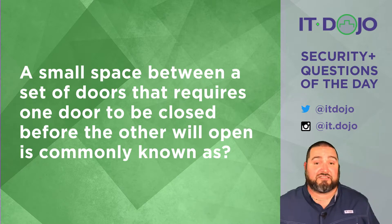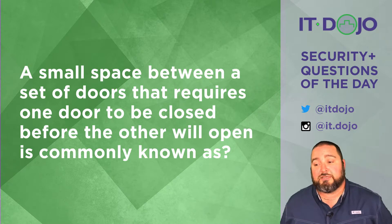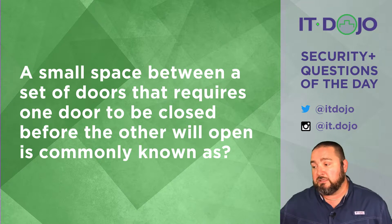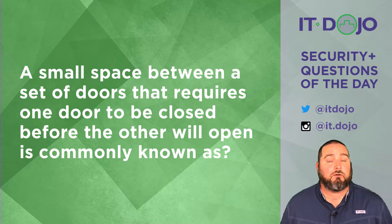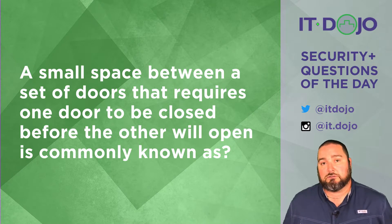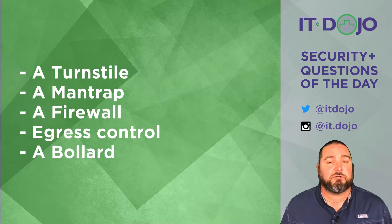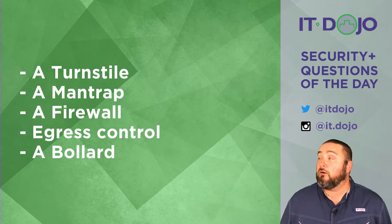On to question number two: you have a small amount of space in between two doors, and in order for the inner door to open, the outer door must be closed, and vice versa. What is this called? There are your answer choices — click on pause if you need to, but click play when you're ready and we can answer the question.